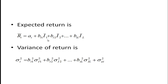If we take the expected return, it looks much like the single index model except we have more terms. The error term drops out because the expected value of the error term equals zero. So the expected return for security i equals ai — this constant — plus the sensitivities to each index as measured by the b's: bi1 times the expected return of the first index, plus bi2 times the expected return of the second index, and so on. The variance of return, sigma squared i, equals bi1 squared times the variance of the first index, plus bi2 squared times the variance of the second index, and so on, plus the variance of the error term. This doesn't look that different from the single index model — in the single index model we would just have one term, plus the variance of the error term.